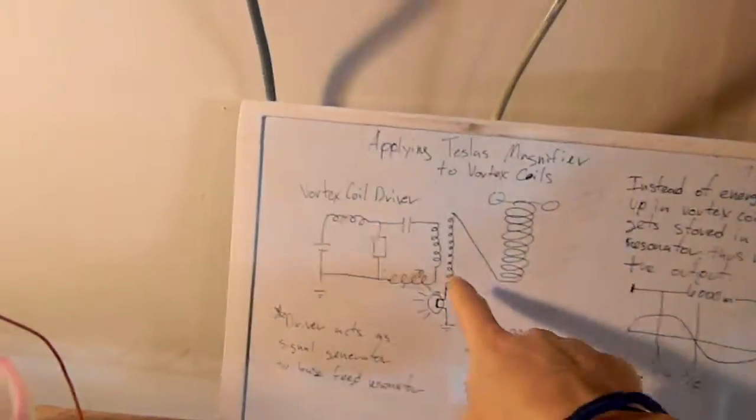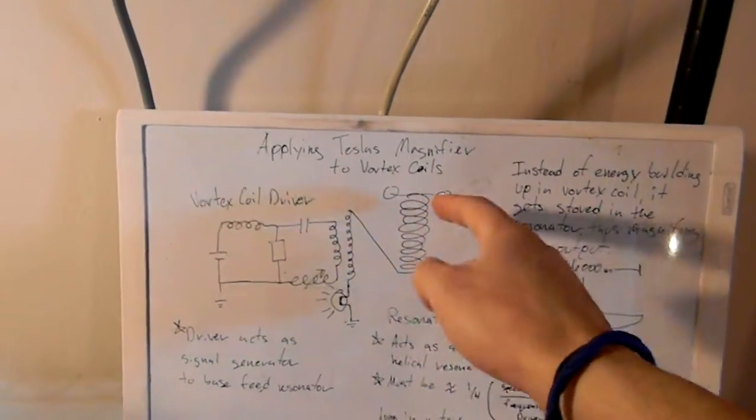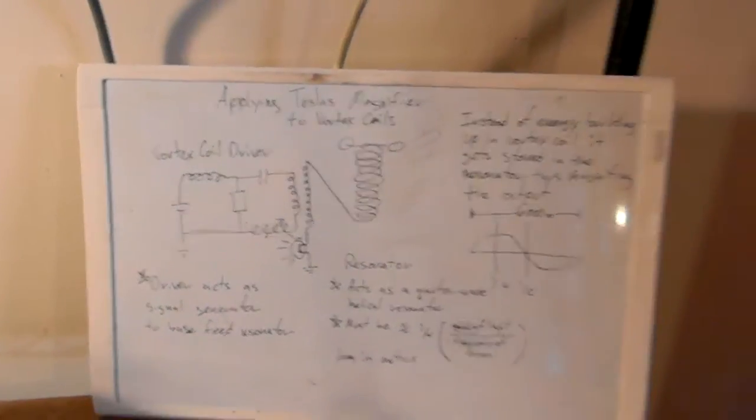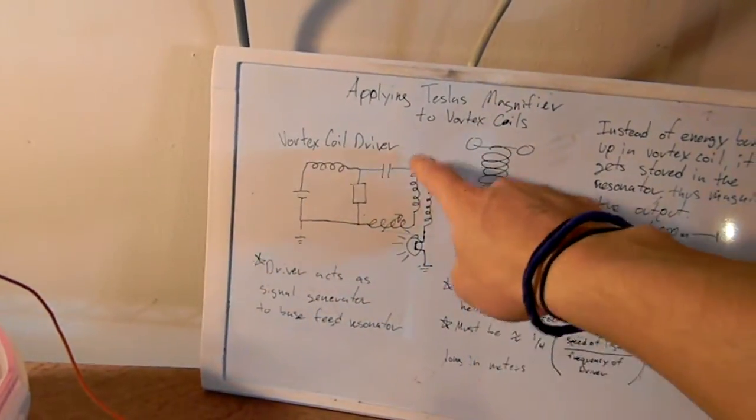So basically the voltage transformation that's occurring in the resonator is strictly by standing wave voltage ratios. It has nothing to do with the number of windings.